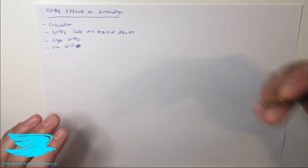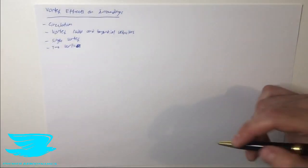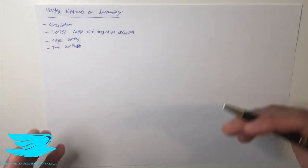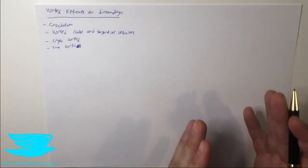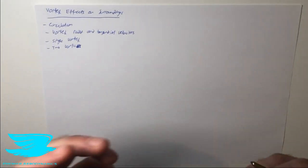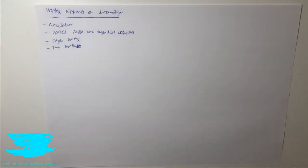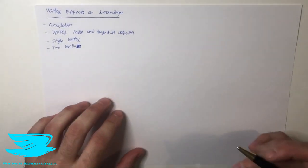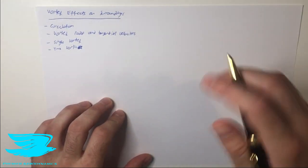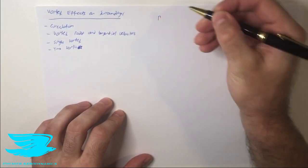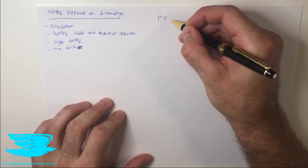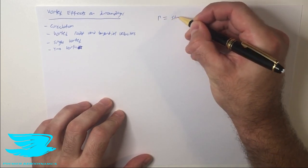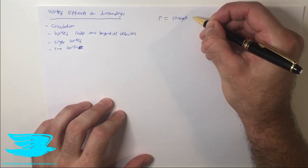We're going to be going through the circulation of a vortex, the vortex's radial and tangential velocities — because these are very important — a single vortex, and two vortices. So first of all, let's talk about the circulation. The circulation, which we denote by the Greek letter gamma, is referred to as the strength of the vortex.